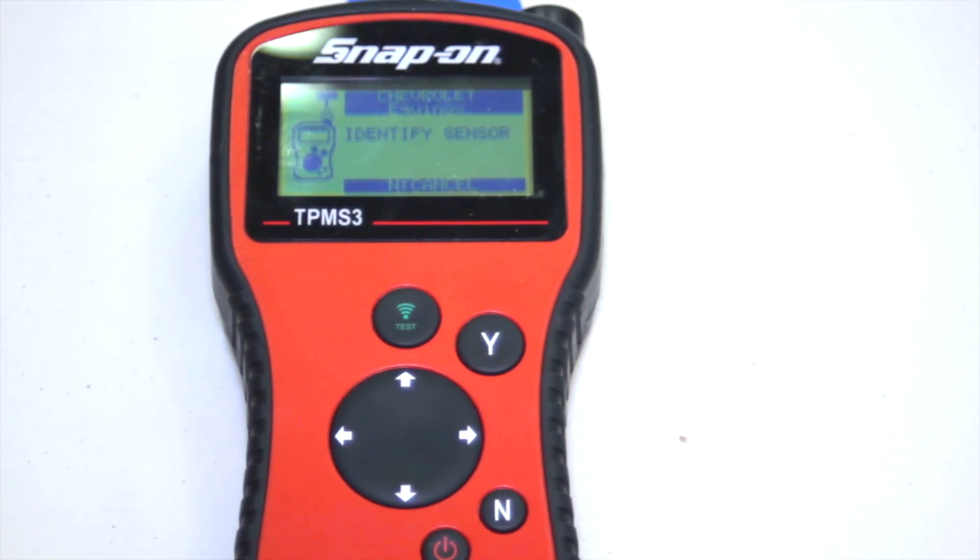Right now the tool is transmitting the appropriate software to fit on the 2012 Equinox to the sensor that's here in front of us.